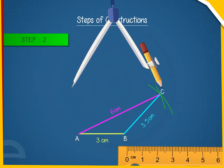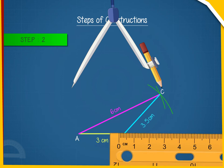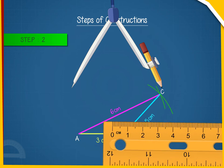Step 2. Now we need to locate the fourth vertex D. This D will be on the side opposite to B, with reference to AC. To locate, we use the remaining two measurements AD equals to 5.5 cm and CD equals to 4 cm.